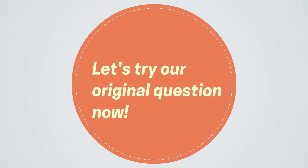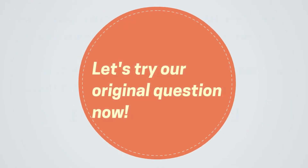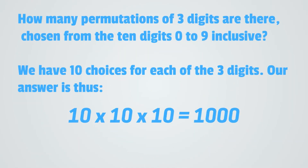Let's try our original question now. How many permutations of 3 digits are there chosen from the 10 digits 0 to 9 inclusive? We have 10 choices for each of the 3 digits. Our answer is thus 10 times 10 times 10, or 1000 arrangements.